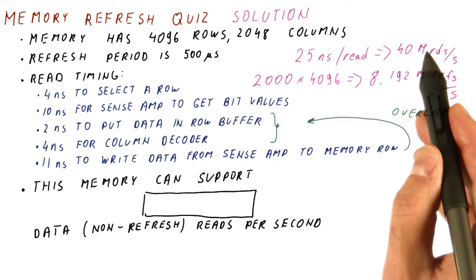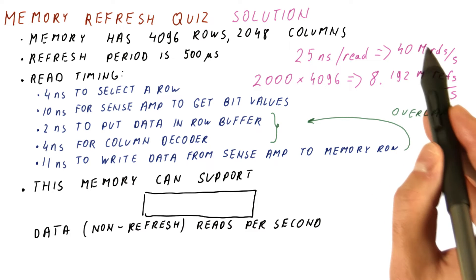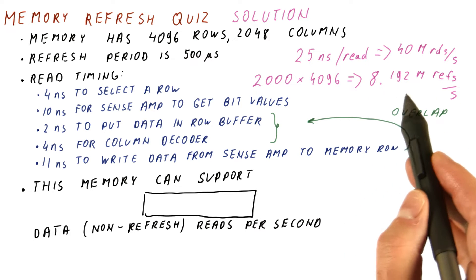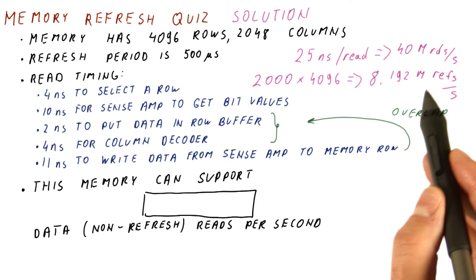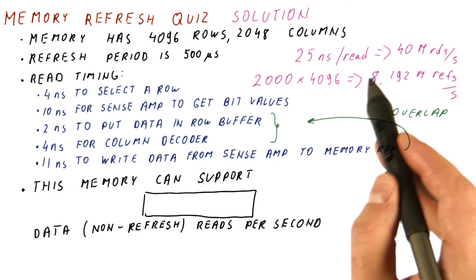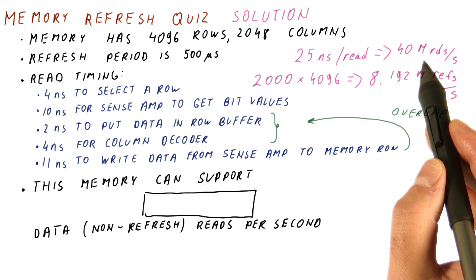And that means that we cannot do all 40 million reads. Pretty much out of these, this was assuming that we don't do refreshes. So because we have to do 8 and change million refreshes, we have that many less reads that we can do.